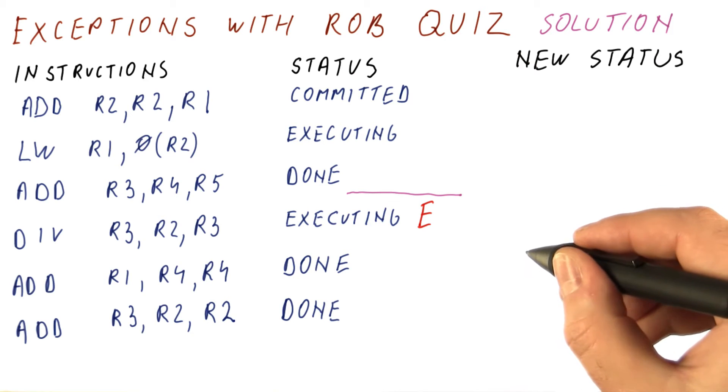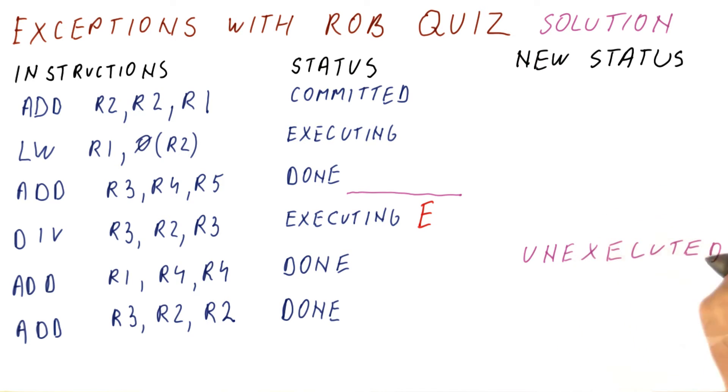So basically, this instruction is flushed from the pipeline. It behaves as if it was not executed at all. This instruction and this instruction as well.